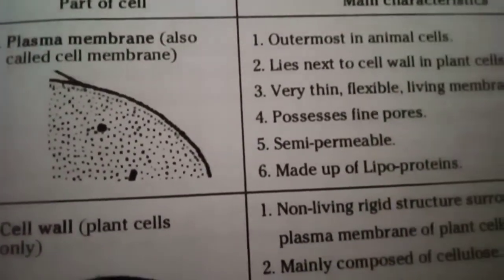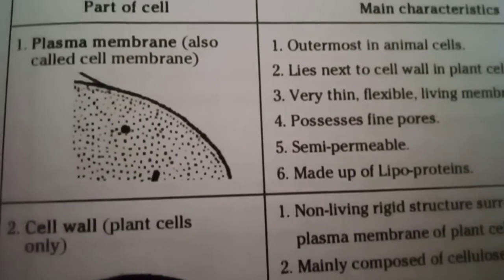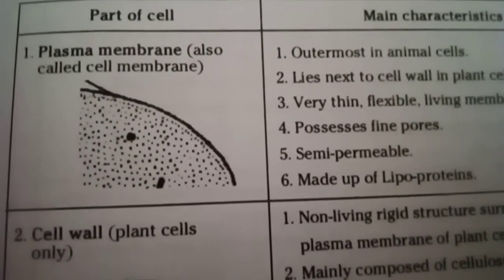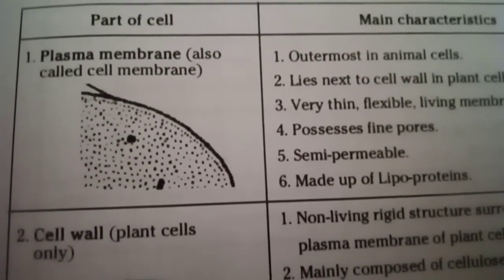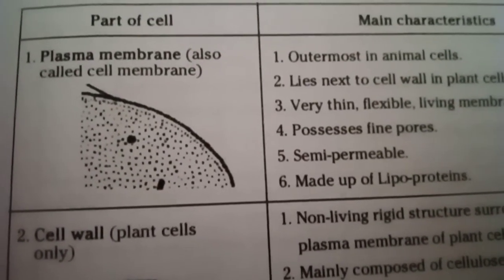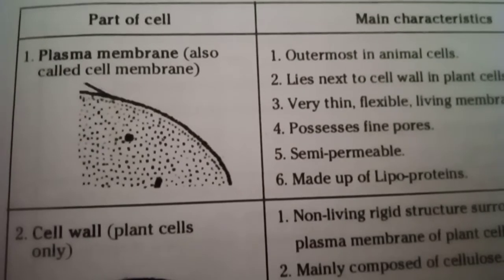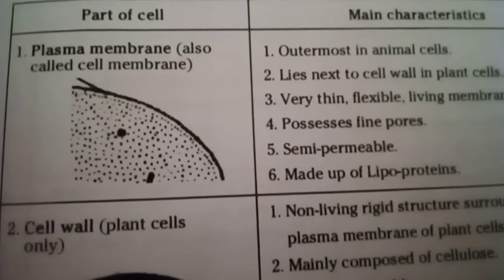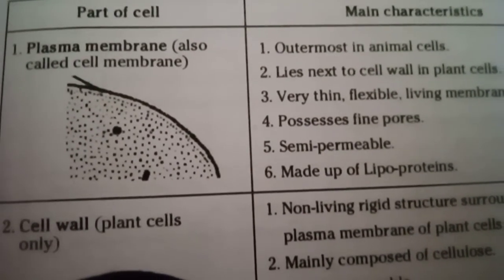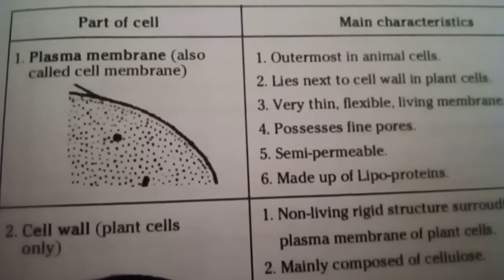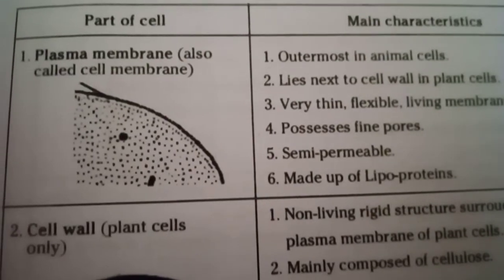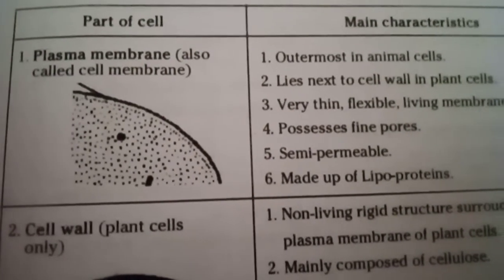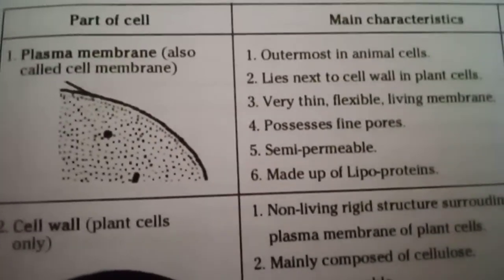In the cytoplasm there are many living parts: endoplasmic reticulum, Golgi bodies, mitochondria, ribosomes, lysosomes, and centrosomes. Centrosomes are only present in animal cells. Plastids are only present in plant cells.